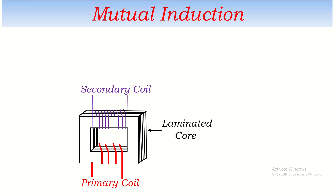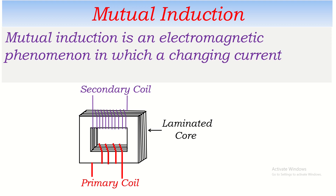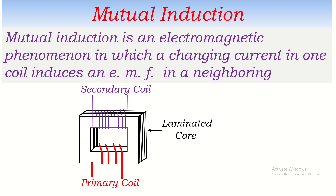Now, how does it work? It works on the principle of mutual induction. Mutual induction is an electromagnetic phenomenon in which a changing current — and it must be AC — in one coil induces an EMF in a neighboring coil. Specifically, a changing current in the primary coil induces an EMF in the secondary coil.